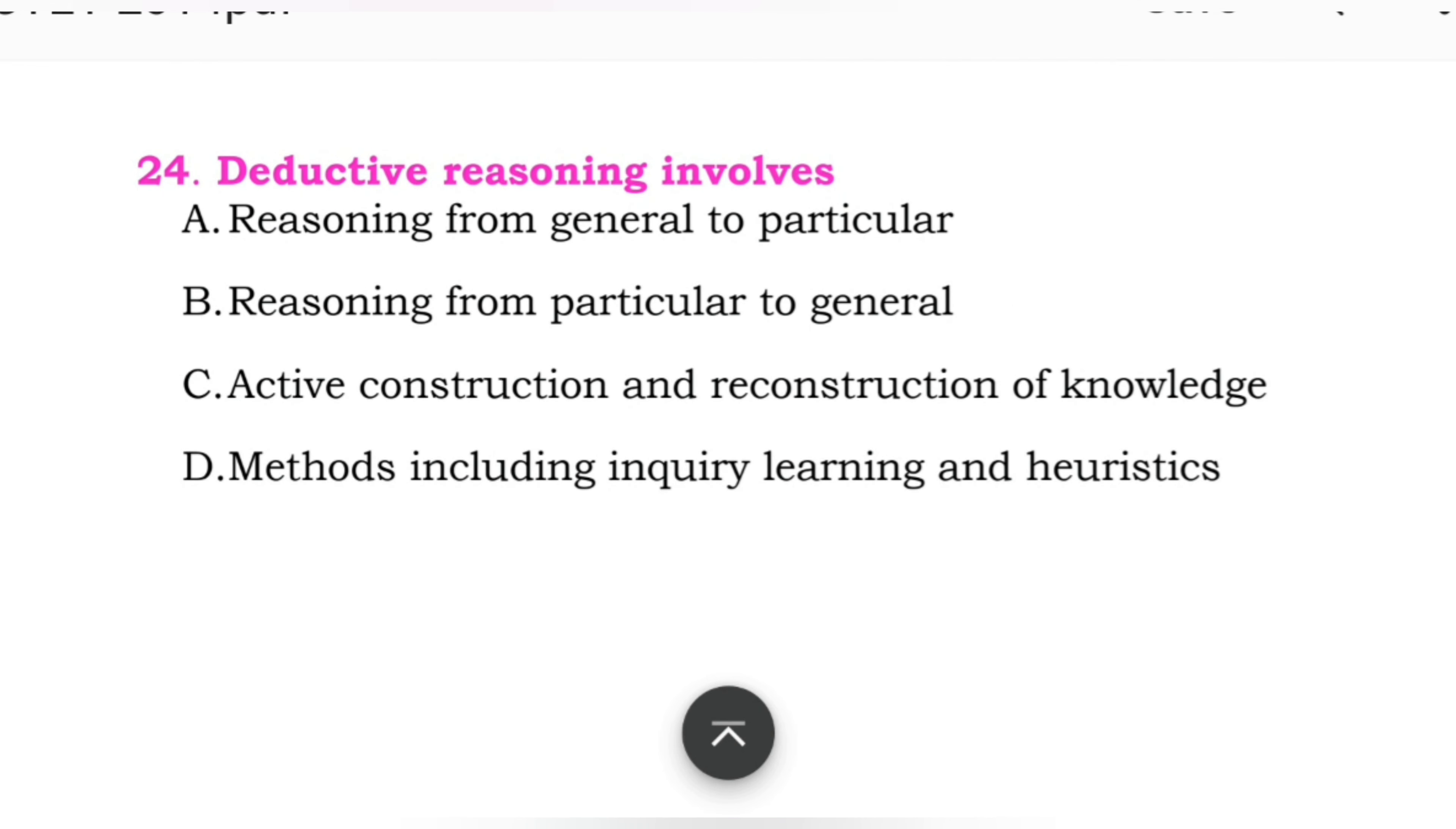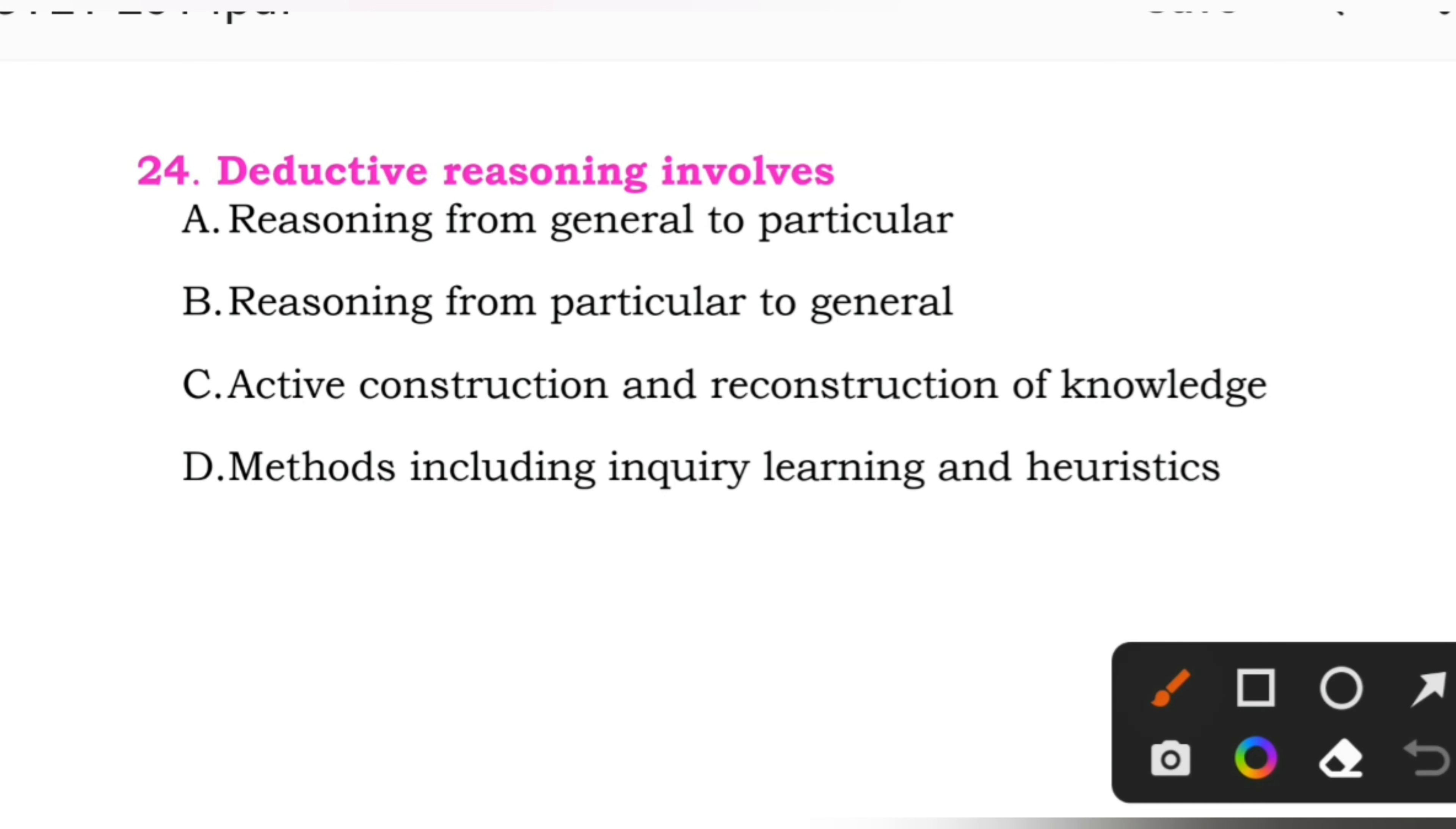Question number 24: Deductive reasoning involves. Options: A: reasoning from general to particular. B: reasoning from particular to general. C: active construction and reconstruction of knowledge. D: methods including inquiry, learning and heuristic. Here the right answer is A, reasoning from general to particular.